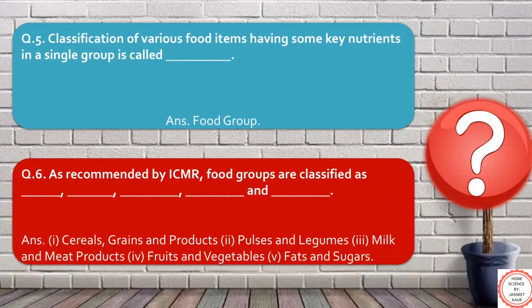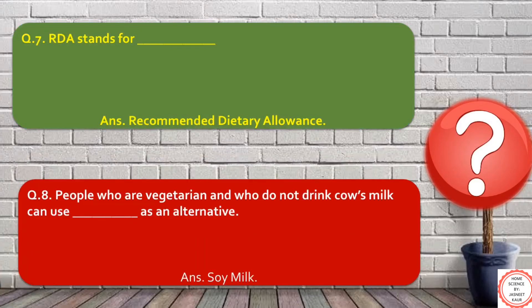Moving on to question number seven: RDA stands for Recommended Dietary Allowance. It helps in knowing how much level of nutrient intake a person needs to have on a daily basis.